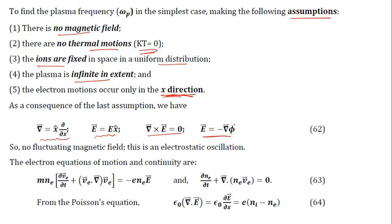Since curl of E equals zero, E can be written as minus grad φ, where φ is the potential. There is no fluctuating magnetic field, so this is an electrostatic oscillation. The magnetic field is taken as zero. The three key equations used for derivation are: the electron equation of motion, the continuity equation, and Poisson's equation — ε₀ (∂E/∂x) = charge density.